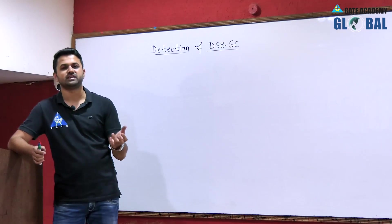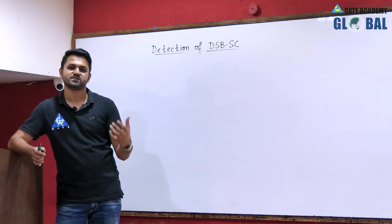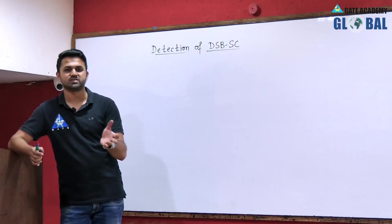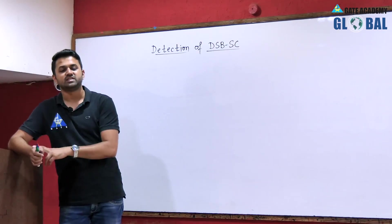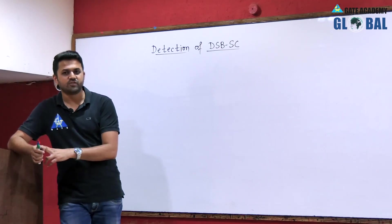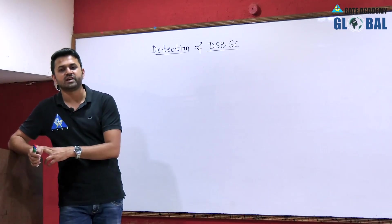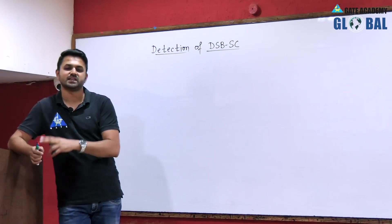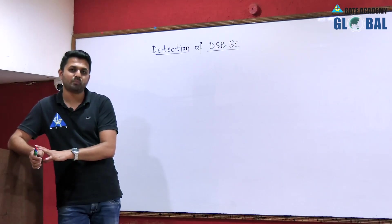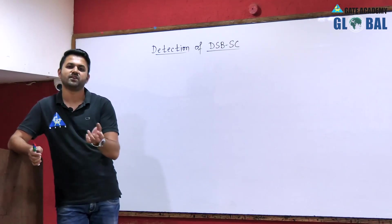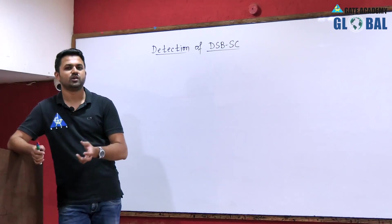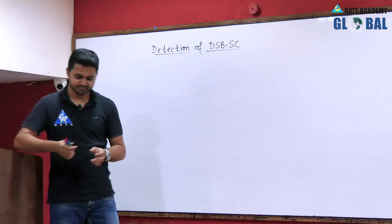In the transmitter we always use a band pass filter because the modulated signal is a band pass signal. Now we want to recover our message signal, and since the message signal is a low pass signal, that is why we will use a low pass filter.